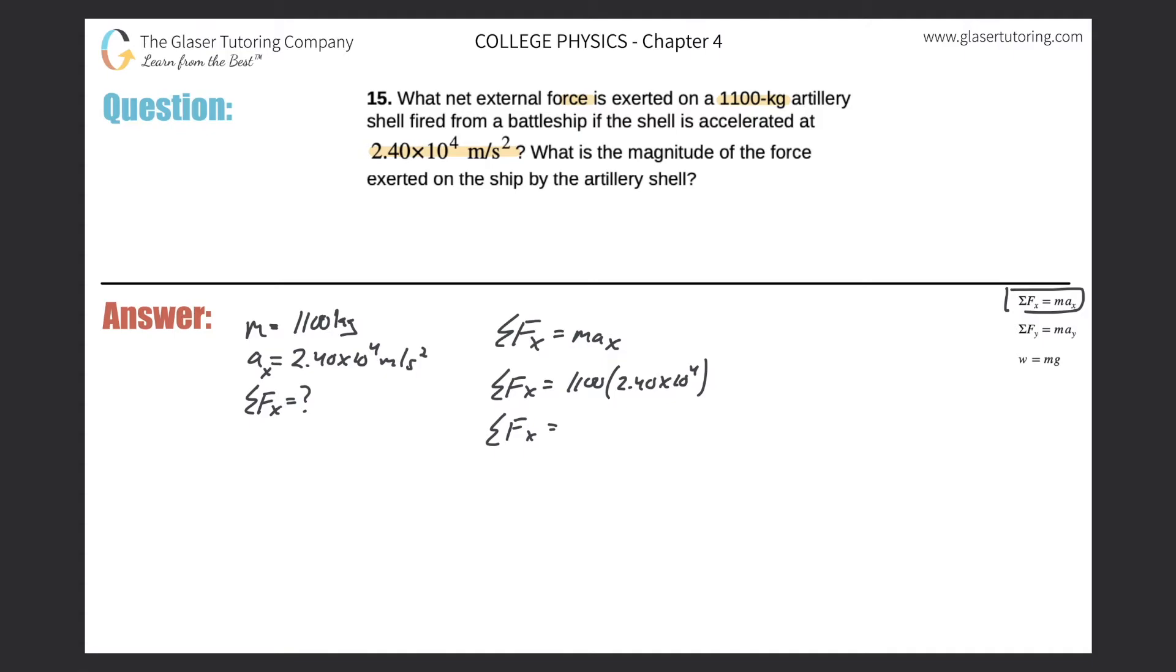So the sum of the forces here will be 1,100 times 2.4 times 10 to the 4th. So we just add essentially 3 to that exponent, and then multiply it by the 100. So it's going to be 2.64 times 10 to the 7th. Let me just double check. 3, 6, 7. Great. And that is in Newtons. So that's the net external force.